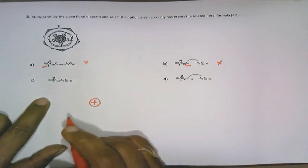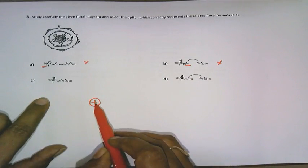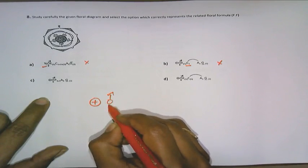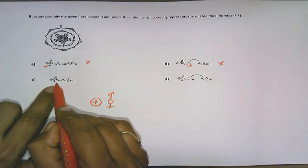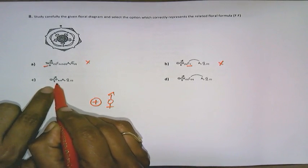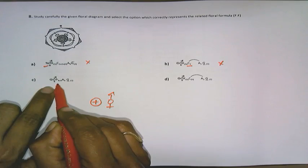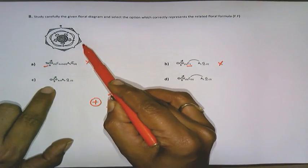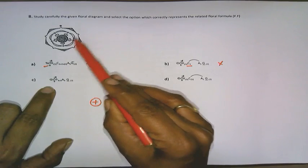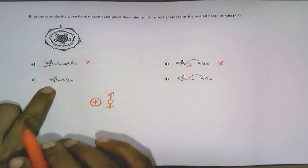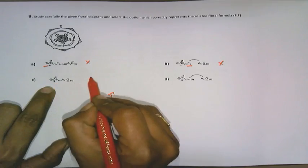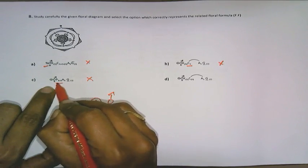As we move on to option C, the symmetry-wise it is actinomorphic. It is a bisexual flower. But what represents here, P 5 plus 5 is represented. P represents a perianth, which is a characteristic feature of monocots. But the floral diagram does not represent that it is a monocot because sepals and petals are clear. Whereas in monocots, sepals and petals cannot be differentiated. They represent the tepals forming the perianth. So this option is wrong because of the perianth which is given here.